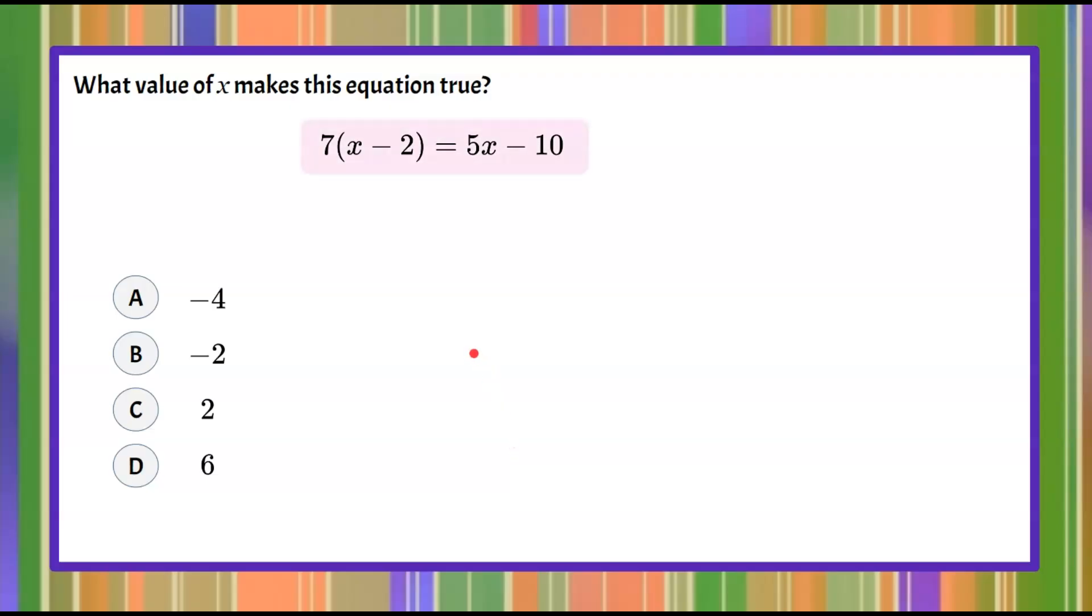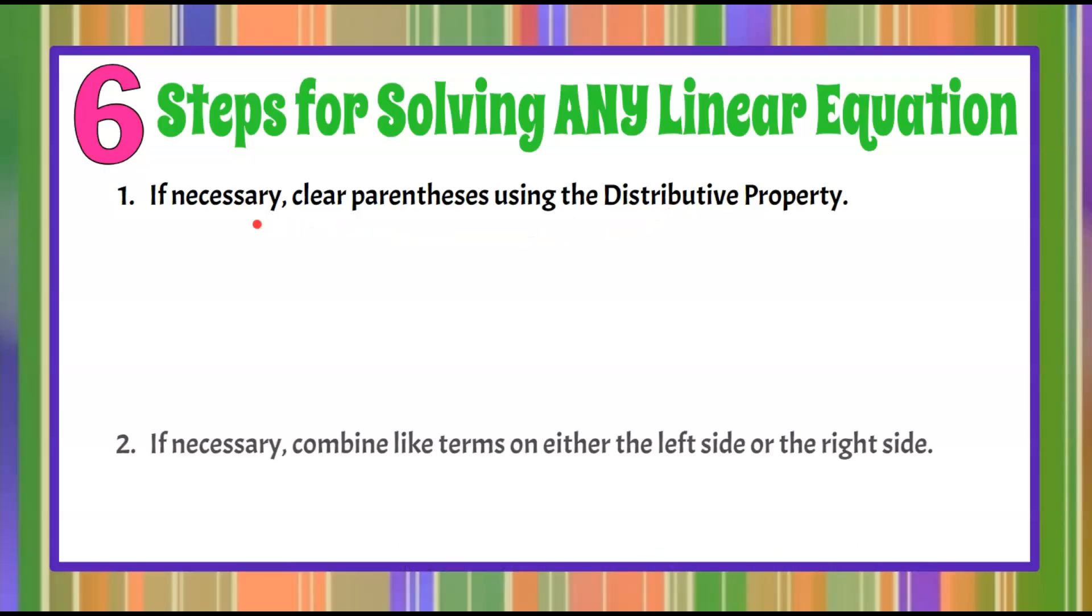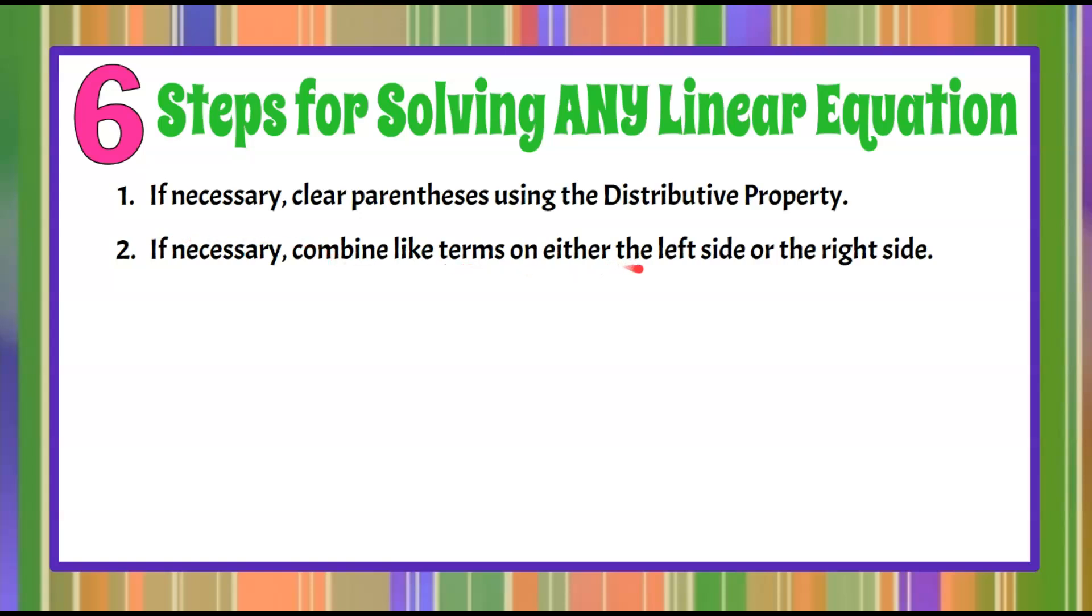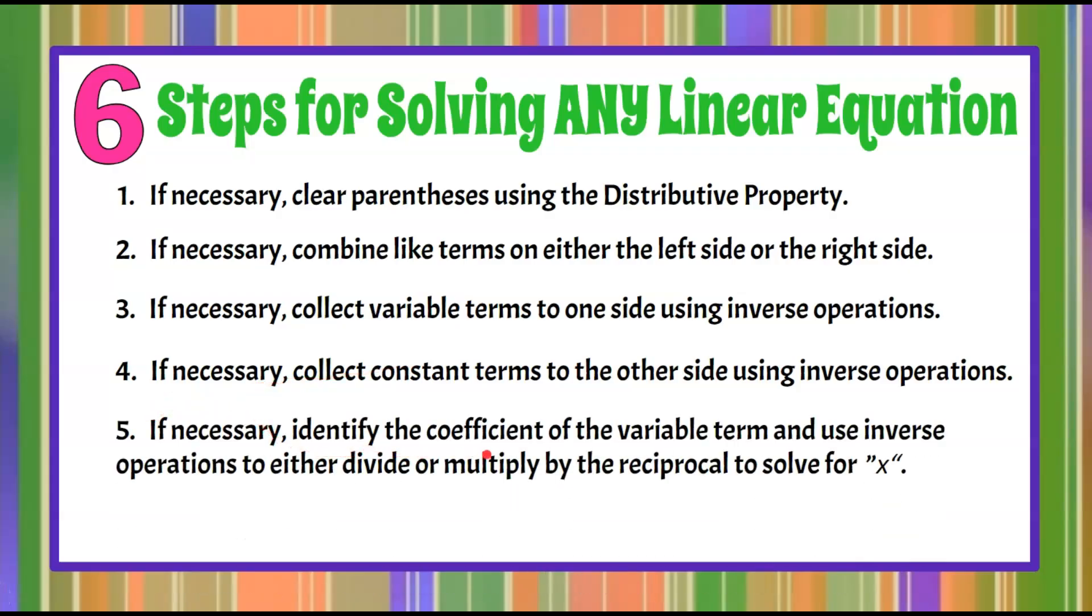We have our six steps to solving this equation. Step one, if necessary we're going to clear parentheses using the distributive property. Step two, if necessary combine like terms on either the left side or the right side. Step three, if necessary we're going to collect variable terms to one side using inverse operations. Step four, if necessary we're going to collect constant terms to the other side using inverse operations. So variables to one side, constant terms to the other. Step five, if necessary we'll identify the coefficient of the variable term and use inverse operations to either divide or multiply by the reciprocal to solve for x.